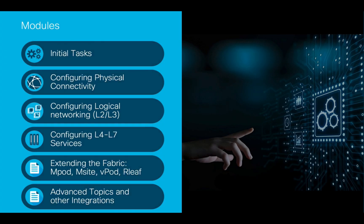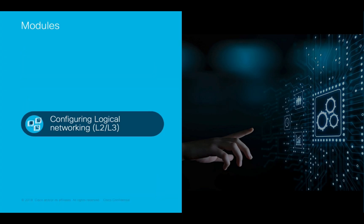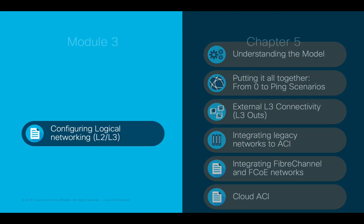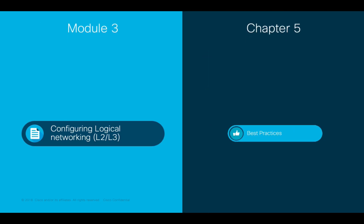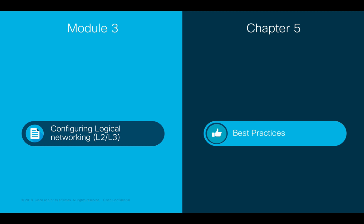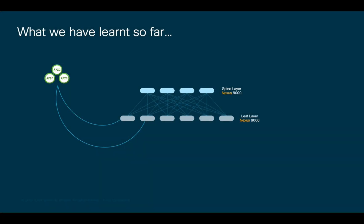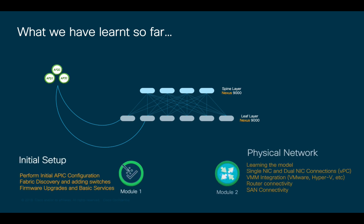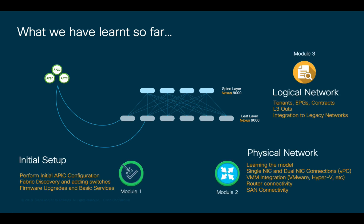Welcome to ACI, the Network Made Simple Learning Series. In this video, we will cover Module 3, Configuring Logical Connectivity, Chapter 5, Wrap-Up and Best Practices. In this module, we learn the logical network configuration constructs as well as the configuration needed to have full-switched and routed connectivity in ACI.